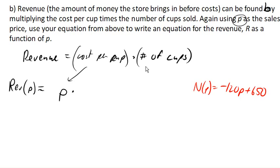How many cups are we gonna sell? Well, that's where this comes in. This equation told me that if my price is P, this is how many cups I should expect to sell. And so, negative 120p plus 650 is my expected number of cups I'm gonna sell.